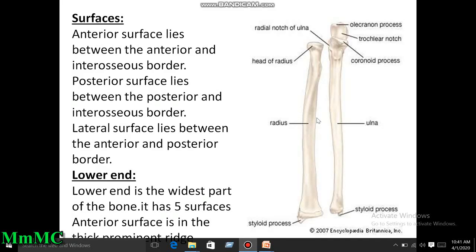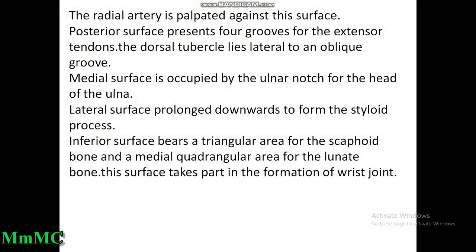The anterior surface lies between the anterior and interosseous borders; the posterior surface lies between the posterior and interosseous borders; the lateral surface lies between the anterior and posterior borders. The lower end is the widest part of the bone. It has five surfaces: the anterior surface has a thick prominent ridge forming the styloid process; the radial artery is palpated against this surface. The posterior surface presents four grooves for extensor tendons; the dorsal tubercle lies lateral to an oblique groove. The medial surface is occupied by the ulnar notch for the head of the ulna. The inferior surface bears a triangular area for the scaphoid and a quadrangular area for the lunate — this surface takes part in the formation of the wrist joint.